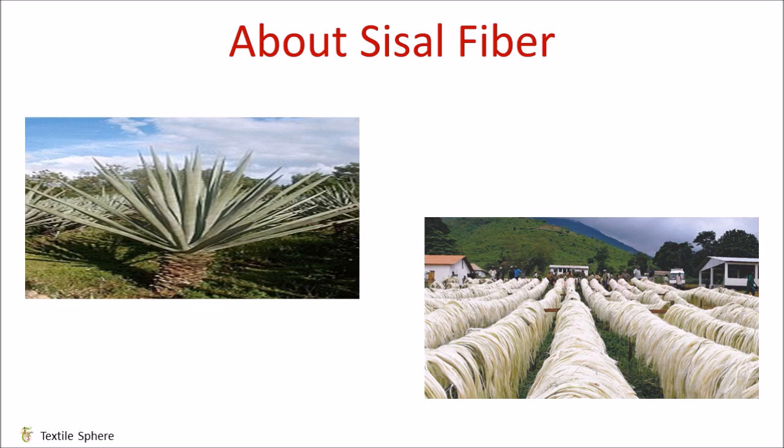Sisal is a member of the Agave family. Agave Sisalana is the commercial grown species. Sisal is generally harvested once a year, but if the soil and the climate permits, it can be harvested three times in two years.